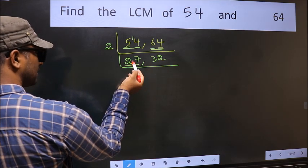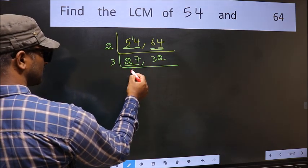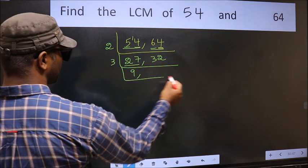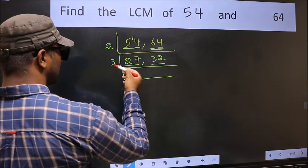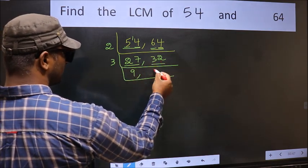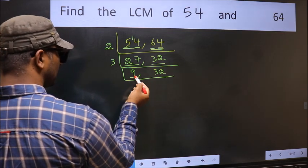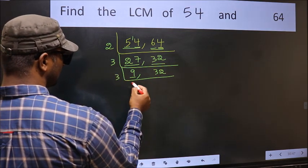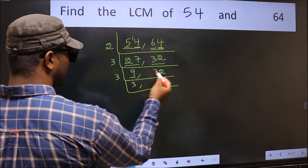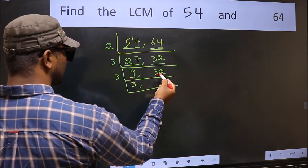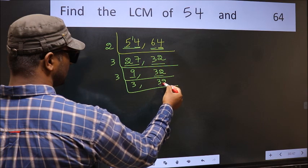Now we have 27. 27 is 3 nines = 27, so divide by 3. The other number 32 is not divisible by 3, so we write it down as it is. Next, we have 9. 9 is 3 threes = 9, so divide by 3 again. 32 is still not divisible by 3, so we write it down as it is.